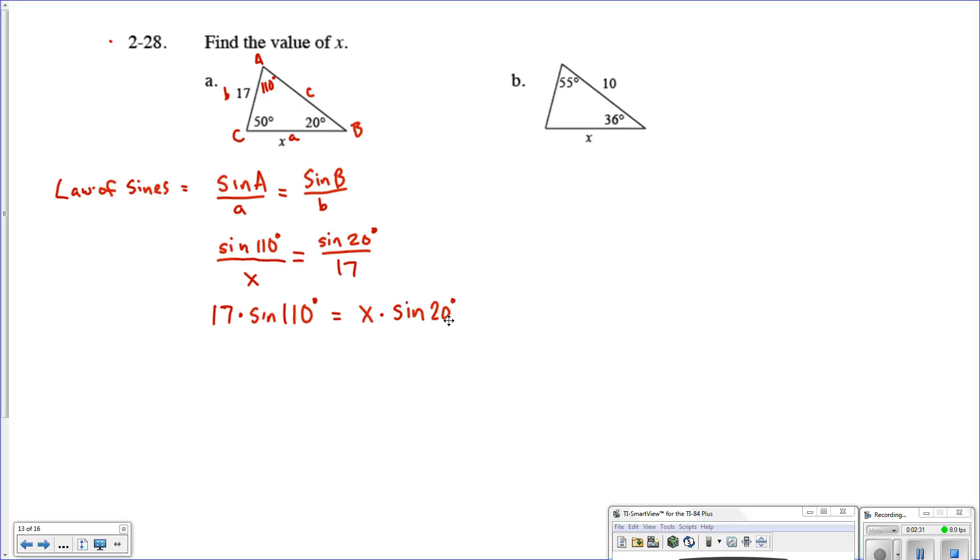So 17 times the sine of 110 degrees should equal x times the sine of 20 degrees. Now I could go ahead and work on getting my x by itself, because I can divide each side by the sine of 20 degrees. So I'll have 17 times the sine of 110 degrees, all divided by the sine of 20 degrees. That should give me the length of x.